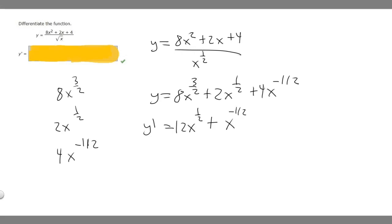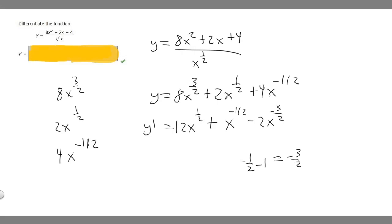For 4x to the minus 1 half, we multiply minus 1 half times 4, which is minus 2. Then we subtract 1 from the exponent: minus 1 half minus 1 equals minus 3 over 2. So our final answer is 12x to the 1 half plus x to the minus 1 half minus 2x to the minus 3 over 2.